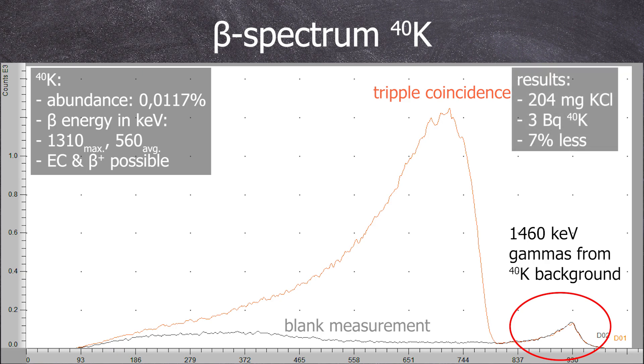We used 204 milligrams of potassium chloride for the measurement and were able to measure an activity of 3 becquerel of potassium-40, which is 7% below the calculated value.